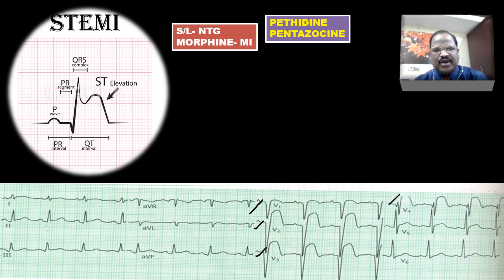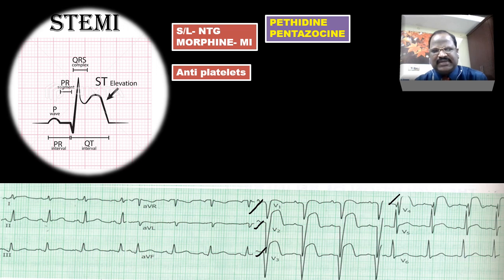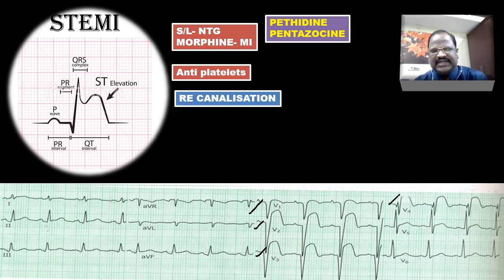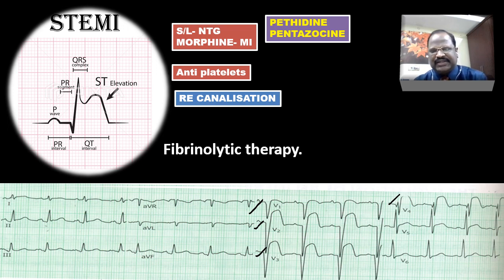After controlling the pain, we have to use antiplatelet — this is the main treatment for MI; antiplatelet is a must. Then we go for recanalization, which can be achieved either by medical therapy or surgical intervention. Medical therapy means fibrinolytic therapy — these are called thrombolytic agents.